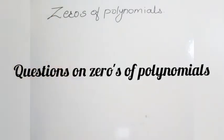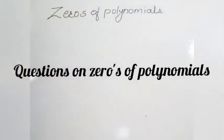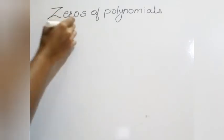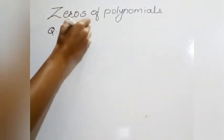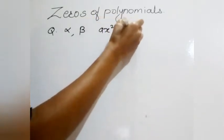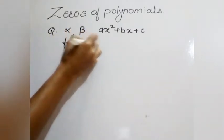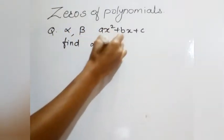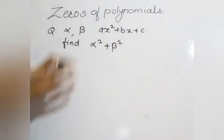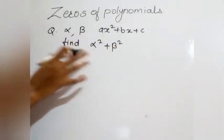Now let's solve some examples of one mark and two marks on the basis of zeros of a polynomial. Suppose we are given a question: if alpha and beta are the zeros of polynomial ax² + bx + c, then find the value of alpha² + beta². For this, we use the sum of zeros and product of zeros.